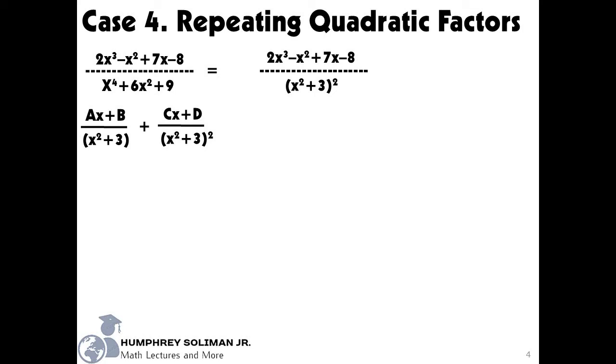We will use the variables A, B, C and D in the numerators, since we are still in the process of finding the partial fractions and we don't know those values yet. After that, we will combine these partial fractions into a single rational expression.